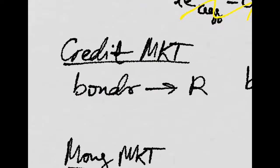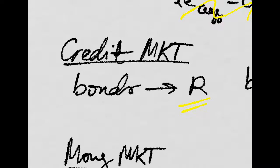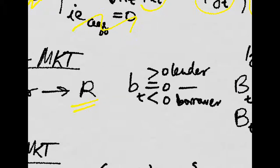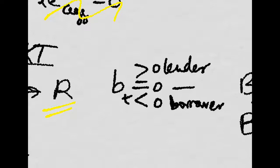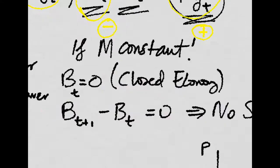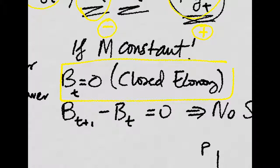Remember that in the credit market, individuals were paid the interest rate, which was the return on bonds. An individual could be a lender and hold a positive amount of bonds, or could be a borrower and hold a negative amount of bonds. But on aggregate, in a closed economy, the stock of bonds is equal to zero, because both cancel out.